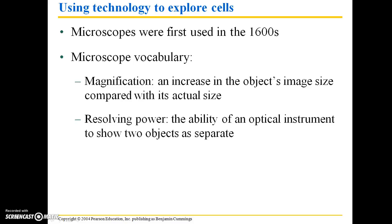Magnification is an increase in the object's image size compared with its actual size. Resolving power is the ability of an optical instrument to show two objects as separate. For example, if you had two red blood cells that you were examining under a microscope, resolving power is what's going to let you distinguish that it's not just a clump but actually two red blood cells. There's going to be a minimum physical distance between those two objects below which you will not be able to tell that they are actually two distinct objects.